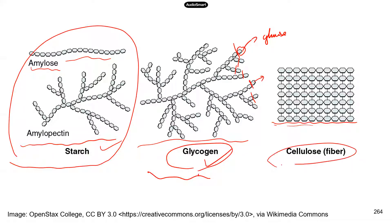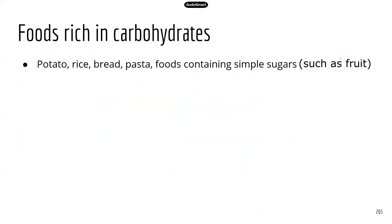For example, cellulose — a fiber — is usually pretty tough. Foods that have a lot of carbohydrates include potatoes, rice, bread, and pasta, and also foods containing simple sugars, since simple sugars are also part of the carbohydrate group.